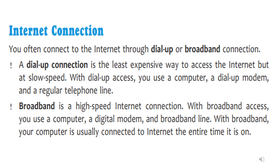If we talk about internet connections, there are two types: one is dial-up and the other is broadband. Nowadays people are not using dial-up connections much, but earlier it was used. Dial-up connection is the least expensive way to access the internet, but it gives very slow speed. For a dial-up connection you need a computer, a dial-up modem, and a regular telephone line.